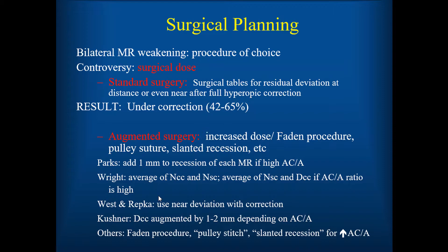In terms of surgical treatment, in the United States most of us do bilateral medial rectus weakening of some type. The controversy is in the surgical dose. Standard surgery, using the standard tables written by Parks and others over the years, results in a very high undercorrection rate — 42 to 65 percent in the literature — even when we use the distance or the near, which is usually a larger deviation, for the surgical table planning. For that reason, a number of augmented surgical techniques have been developed to increase the dose or to add a Faden procedure, a pulley suture, slanted recessions, and other procedures to try to catch these undercorrections and eliminate them.